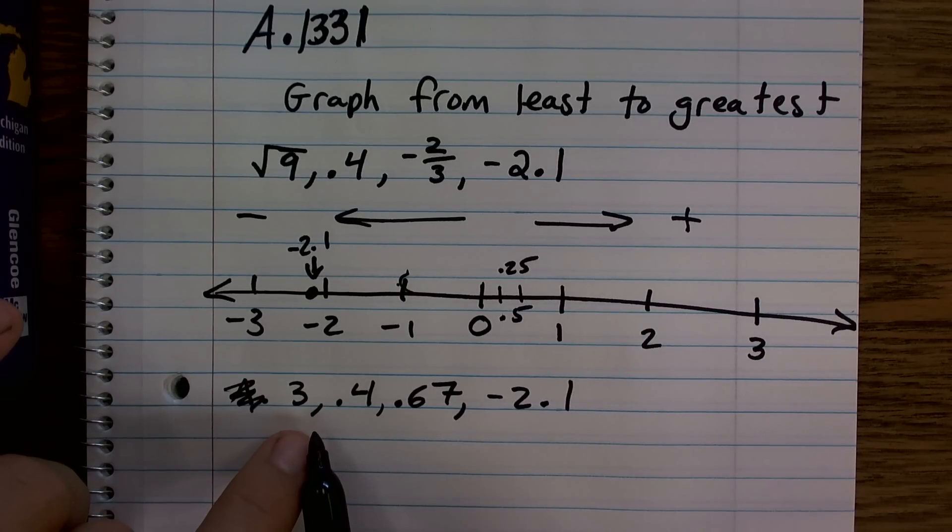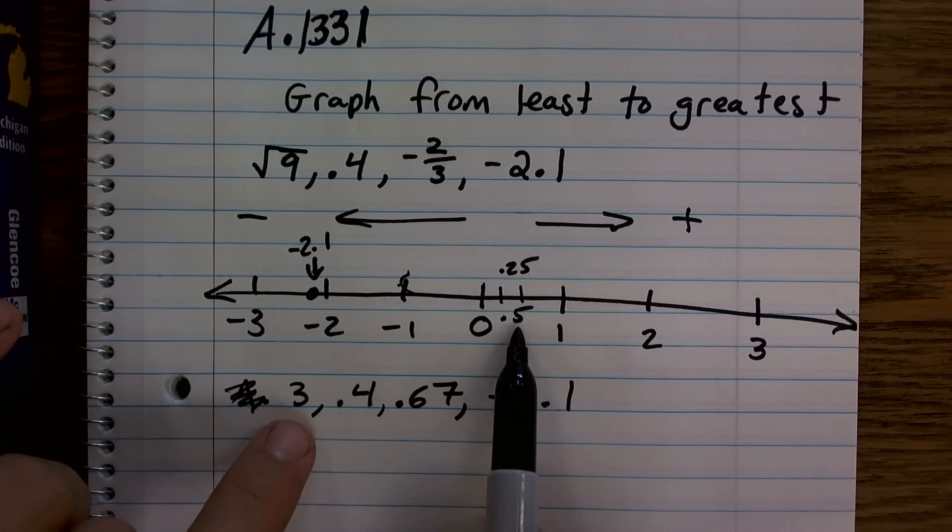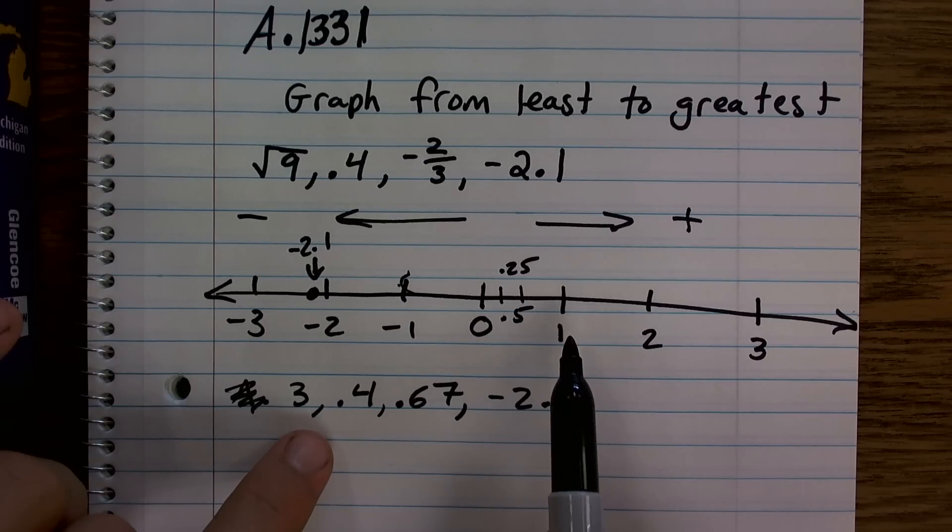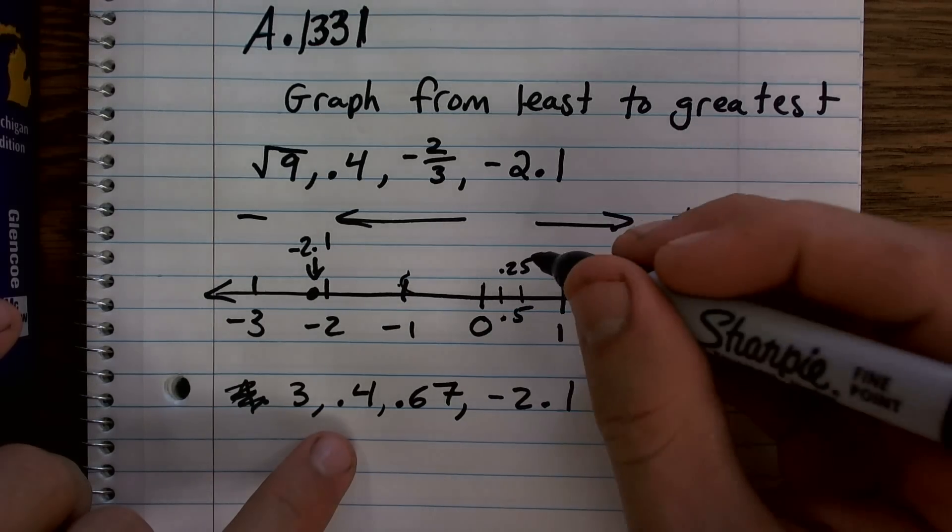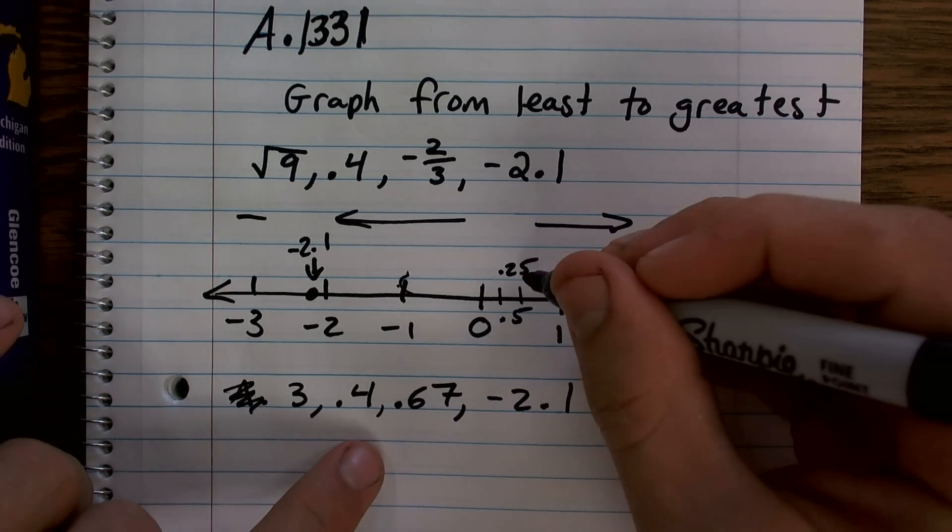So then I need to look at, all right, so then I'm going into the positive. What's the next smallest positive numbers? Well, since I have these two are both less than 1, 0.4 is less than 0.67.